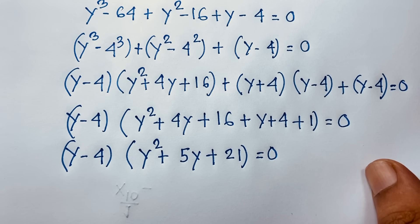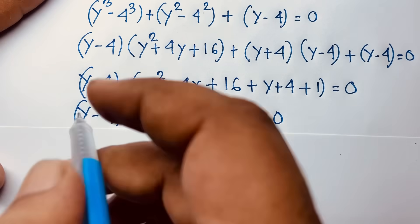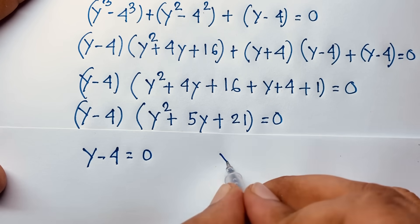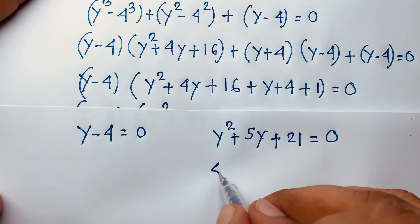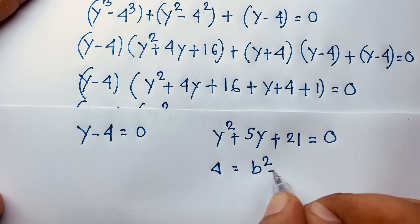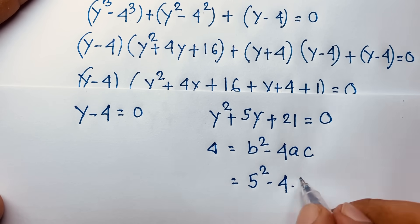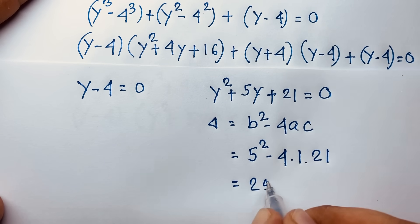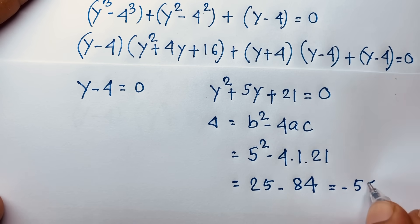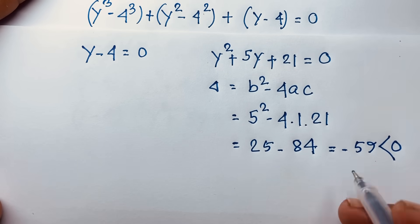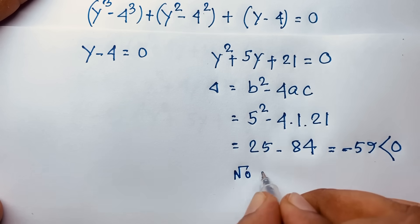This gives us two cases. Case one: y minus 4 equals 0. Case two: y squared plus 5y plus 21 equals 0. For case two, the discriminant delta equals b squared minus 4ac equals 5 squared minus 4 times 1 times 21, which is 25 minus 84, equals negative 59. Since the discriminant is less than zero, this gives only complex solutions, so there is no real solution from case two.